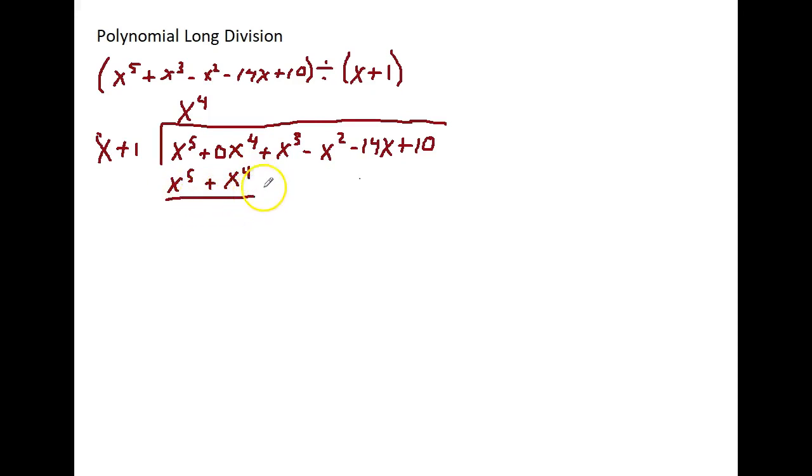The next thing I have to do is subtract. So I'm going to change colors every time I do my subtracting. Now, to subtract means I have to change the sign of everything being subtracted. So minus this and minus this. Now I just combine like terms, so this cancels. That will always happen because we set it up that way. 0x to the 4th minus 1x to the 4th is negative x to the 4th.